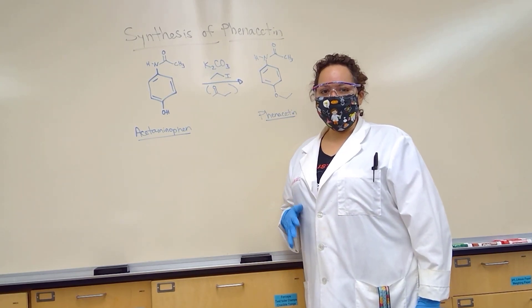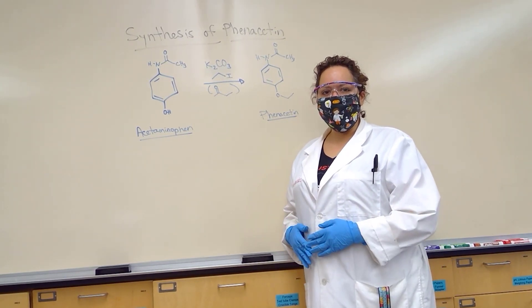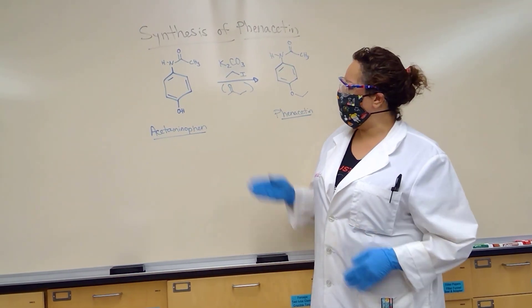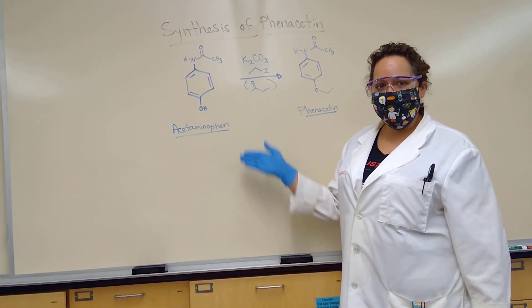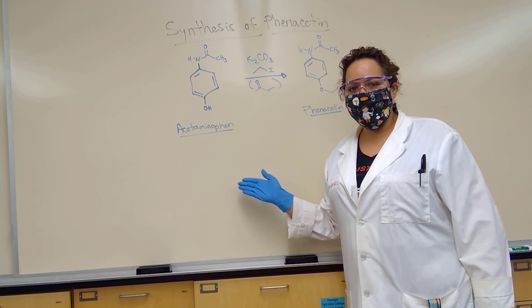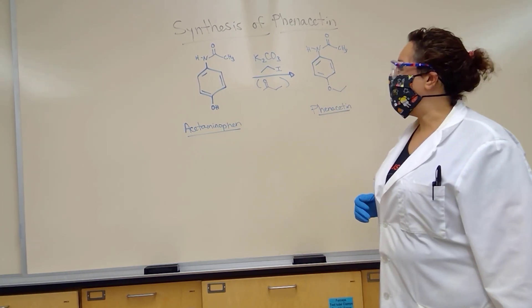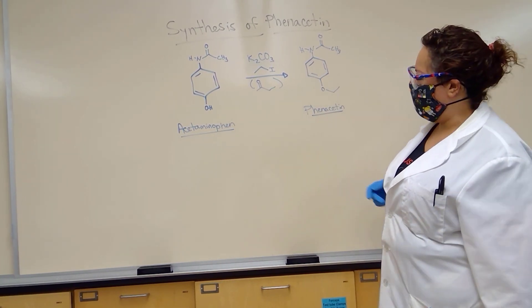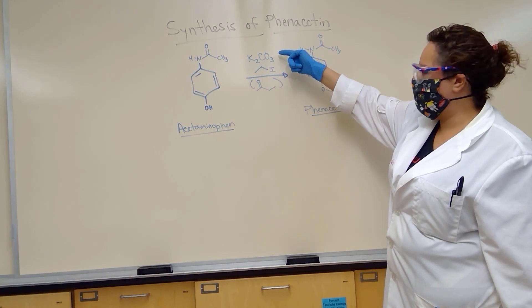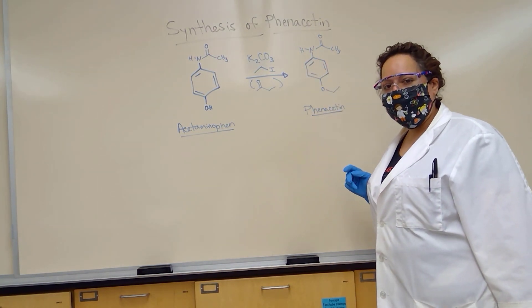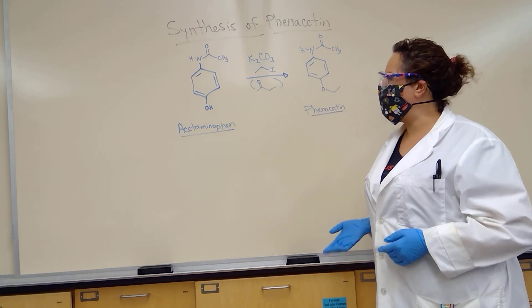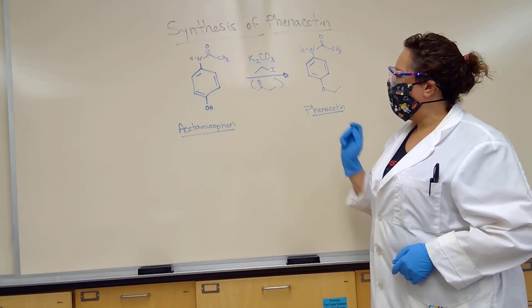Today we are working on the synthesis of phenacetin from acetaminophen. We will be starting with the compound acetaminophen, which is sold under the commercial name Tylenol. We will be reacting this compound with a base, and our base will be potassium carbonate. Our electrophile for this Williamson ether synthesis will be ethyl iodide.